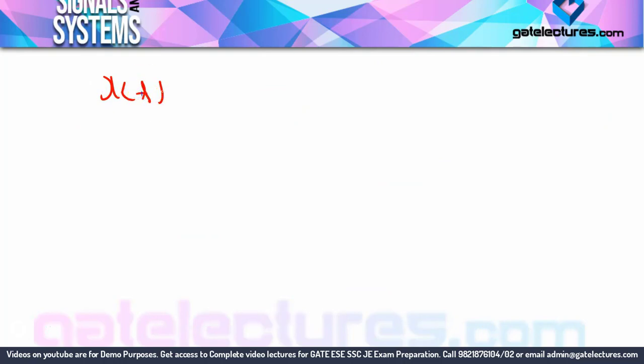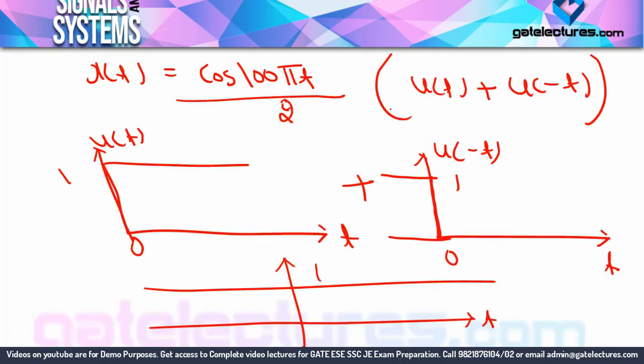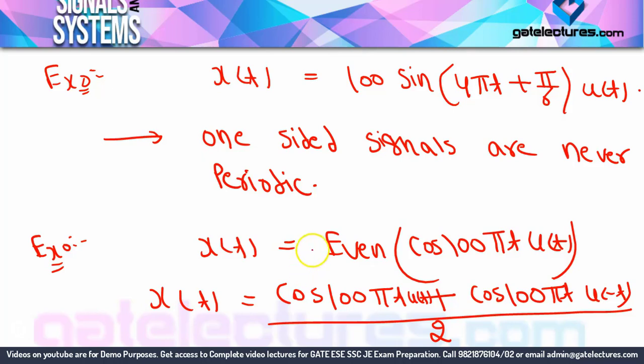After finding the even part, x(t) = cos(100πt)/2. The u(t) has been removed! Since cosine individually is always periodic, this signal is periodic. The omega = 100π, so the time period = 2π/100π = 1/50 second.